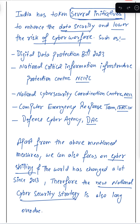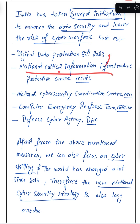India has taken several initiatives to enhance data security and lower the risk of cyber warfare. If you write these in paragraph format as five points — such as National Critical Information Infrastructure Protection Center, Digital Data Protection Bill — it is not presentable and not readable. So you may wonder: should I use bullet form? Will marks be deducted? No, bullet form is actually a very good way to present multiple points.